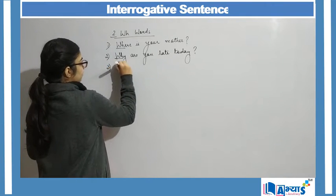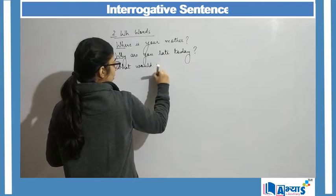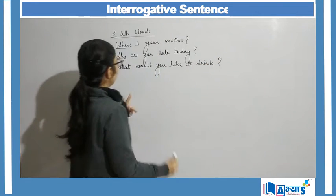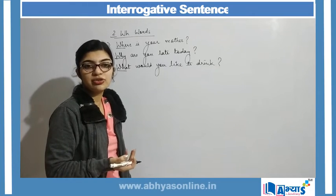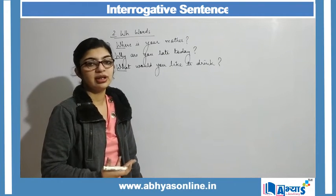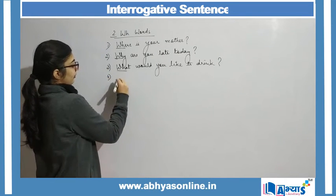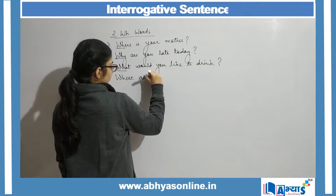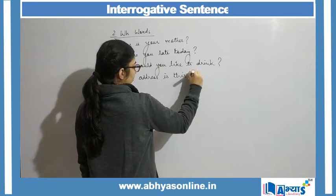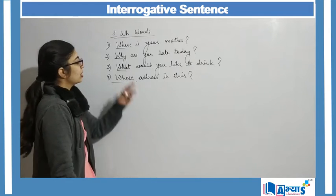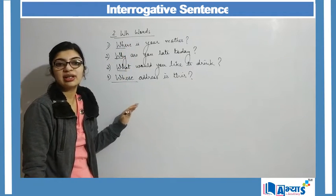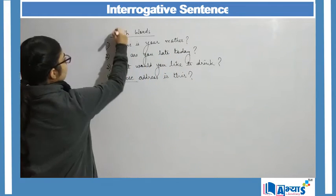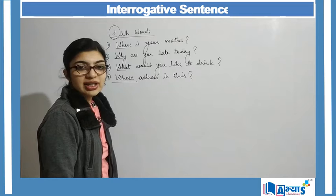Another example is, 'What would you like to drink?' — I am asking because I want to know what the person would like to drink so that I can get that for them. Then, 'Whose address is this?' — again a WH word. So where, why, what, whose — all these are WH words which are used for asking questions or for interrogation. This was the second way in which interrogative sentences can be used.